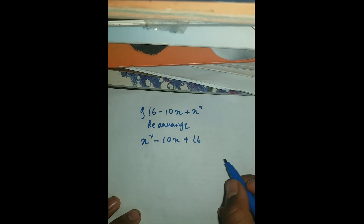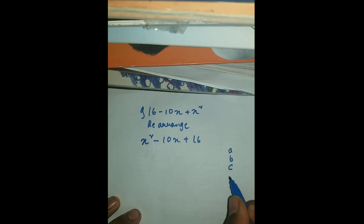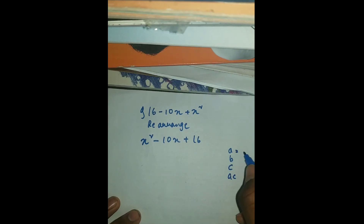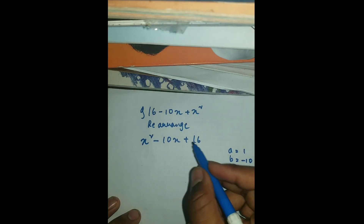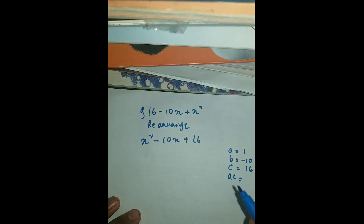So now all you have to do is write a, b, c and a·c. So what is your a? It's 1. b is minus 10. c is 16. And a·c is 16 times 1, which is also 16.